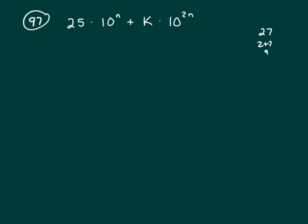So I want you to realize that multiplying by 10 to the n, all that's going to do is add zeros. And multiplying by 10 to the 2n, once again, that's just going to add zeros to your number.